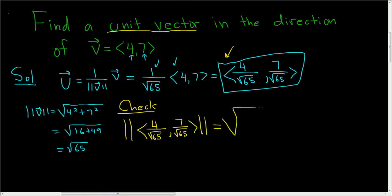And so this is the square root, it's a giant square root, 4 over the square root of 65 squared. You add, you square the components and add them, and then 7 over the square root of 65.